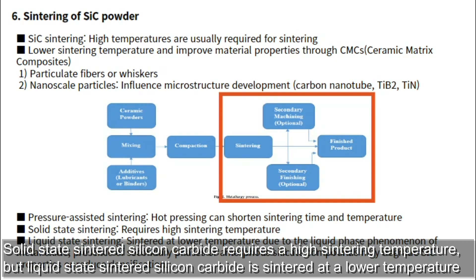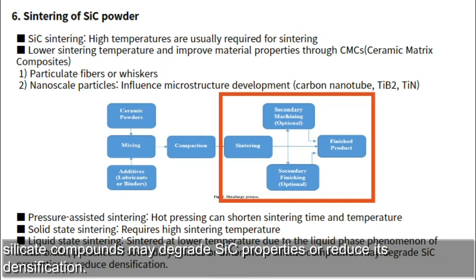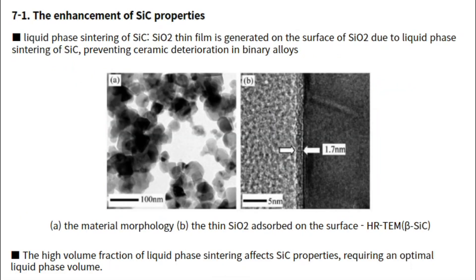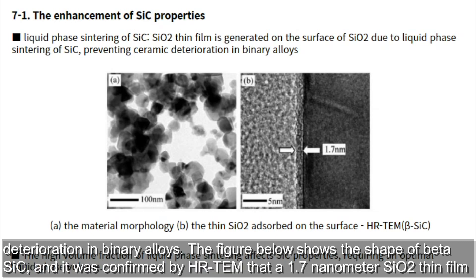Solid-state-sintered silicon carbide requires a high sintering temperature, but liquid-state-sintered silicon carbide is sintered at a lower temperature due to the liquid phase phenomenon of metal oxides. Although temperature is controlled, the presence of secondary phases or amorphous silicate compounds may degrade SiC properties or reduce densification. Liquid phase sintering of SiC results in a SiO2 thin film on the surface, which inhibits adhesion and wetting and prevents ceramic deterioration in binary alloys.